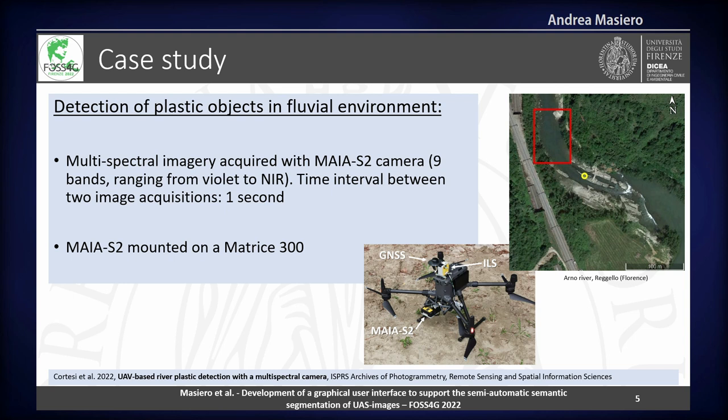As you can see in this slide, what we use is a multispectral camera — the Maya camera — in the Sentinel-2 configuration. So we use nine bands, nine multispectral channels, and we mounted this camera on the Matrix 300. We collected something like some thousands of images of plastic objects on the Arno River, in the example that we are looking at in this slide.